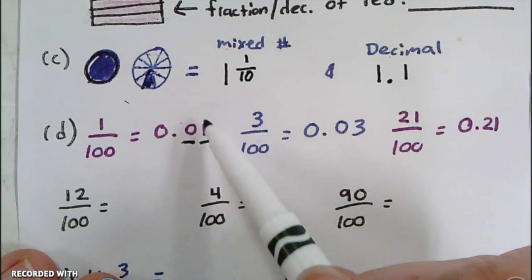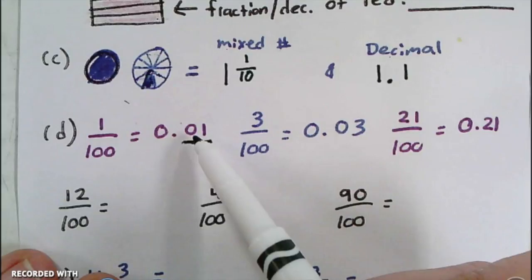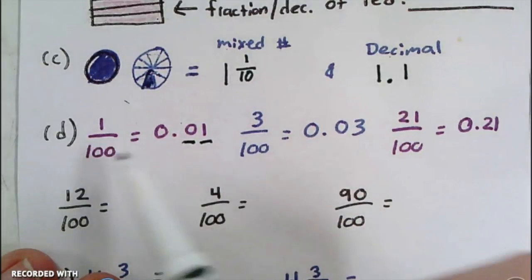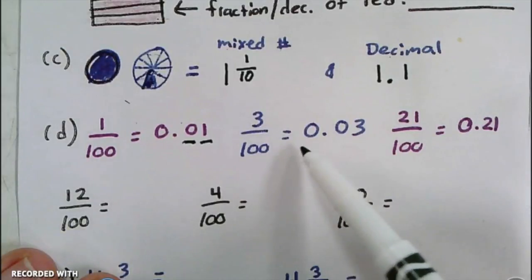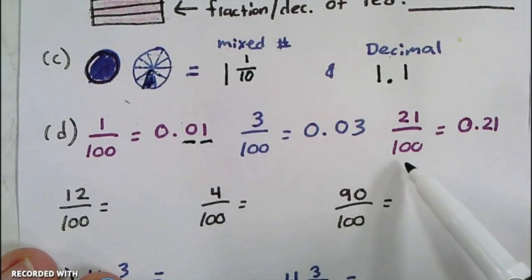zero to hold my place. So one-hundredth is 0.01, three-hundredths is 0.03, and 21 hundredths is 0.21.